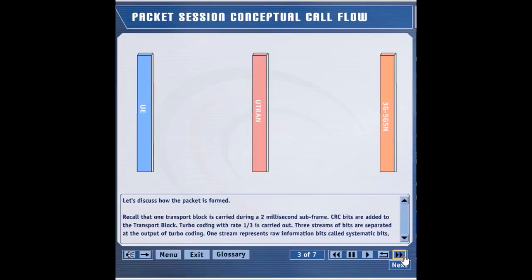Let's look at a conceptual call flow that highlights major steps necessary before Sue can start downloading a web page. Major entities that are involved in the call setup are the UE, UTRAN, and 3GSGSN.